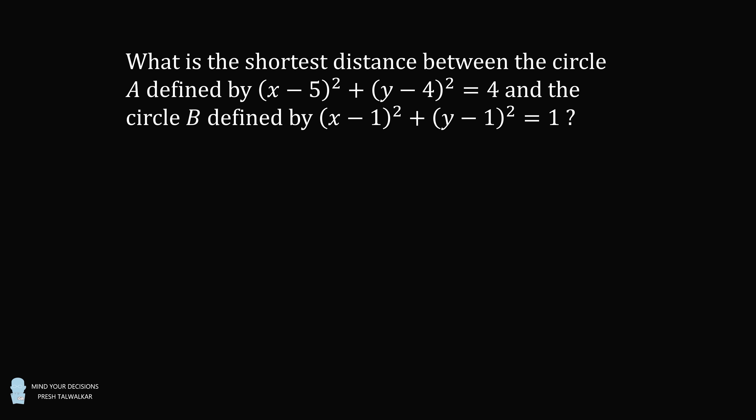What is the shortest distance between circle A, defined by the equation (x minus 5) squared plus (y minus 4) squared equals 4, and circle B, defined by the equation (x minus 1) squared plus (y minus 1) squared equals 1?